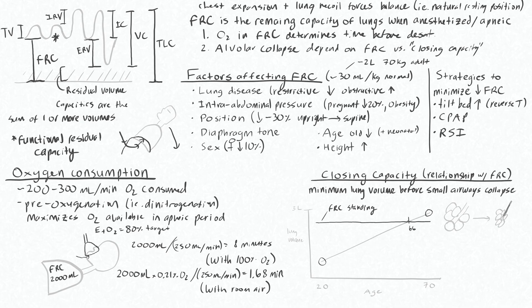That means that up until this point, the closing capacity is relatively inconsequential because you can just breathe at your normal volumes. You can breathe at your normal volumes and your closing capacity is going to be down here. So you'll never, naturally breathing, dip down to such a low lung volume that you start to get collapse of your small airways.